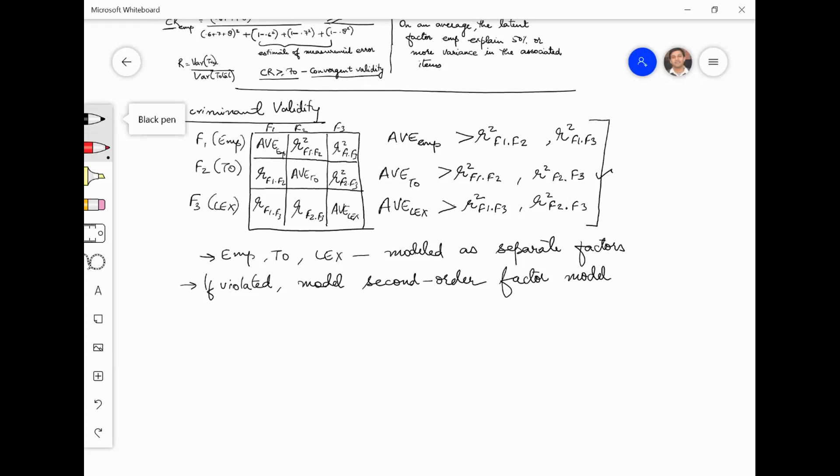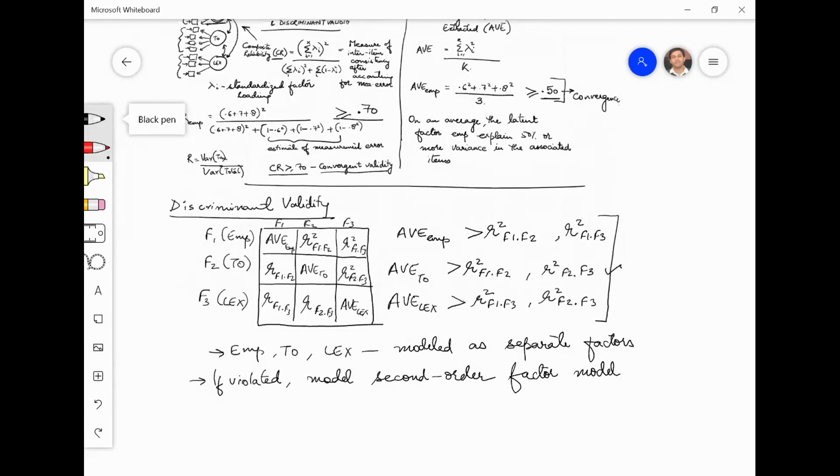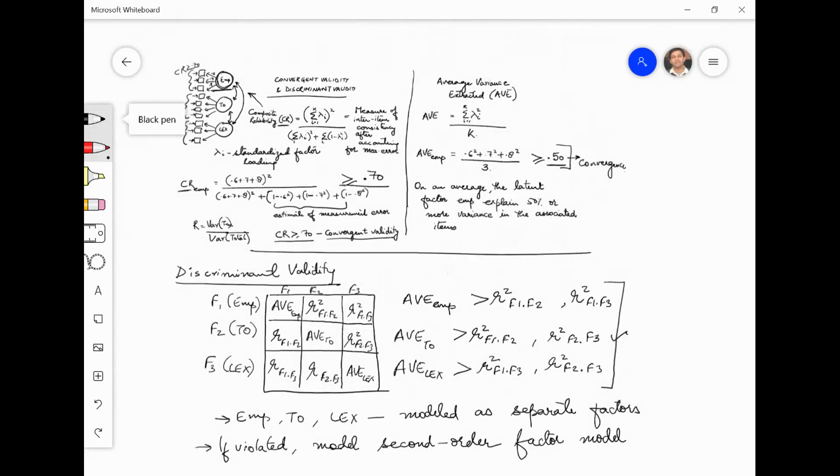In case our convergent validity is coming good and meeting the threshold and discriminant validity is not meeting the threshold, in that case also do we go for second order modeling? Yes. Because convergence here we are only talking about items converging on their latent factor, whereas the second order factor is needed when these factors are not discriminant to each other.